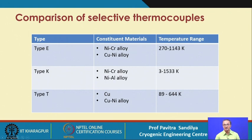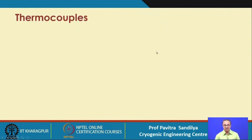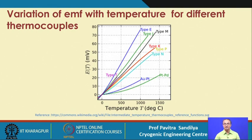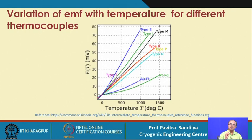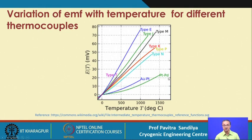The slope of the EMF-temperature variation determines the sensitivity of the thermocouple. A sensitive device should detect even small temperature changes effectively. Gold-platinum or platinum-palladium thermocouples are less sensitive than other types, but sensitivity is only one of the parameters used to decide the choice of thermocouple — there are other parameters as well.